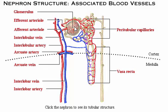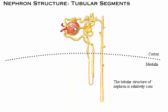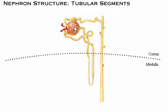The tubular structure of the nephron is relatively complex. The expanded cup-shaped end of the tubule surrounding the glomerulus is called the glomerular or Bowman's capsule. Water and solutes pass from the blood into the glomerular capsule and then flow into the proximal convoluted tubule, or PCT.